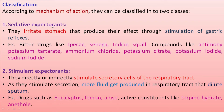Sedative expectorants irritate the stomach, stimulating gastric reflexes, so that sputum is expelled due to stimulation of those reflexes. Examples of sedative expectorants include bitter drugs like Ipecac, Senega, and Indian Squill. Chemical agents such as antimony potassium tartrate, ammonium chloride, potassium citrate, potassium iodide, and sodium iodide also act as sedative expectorants.